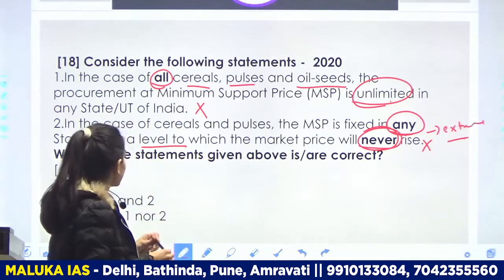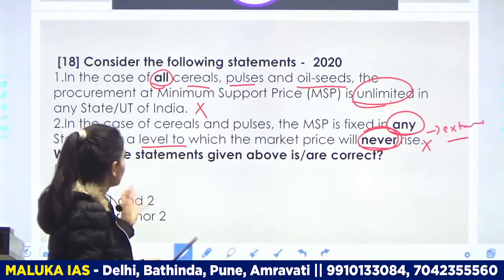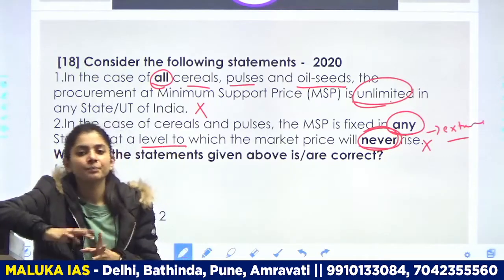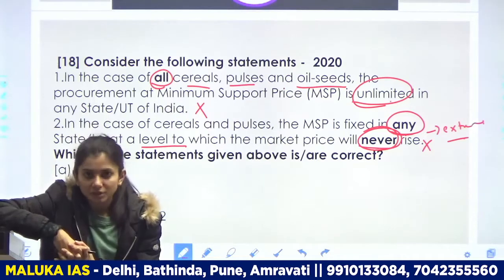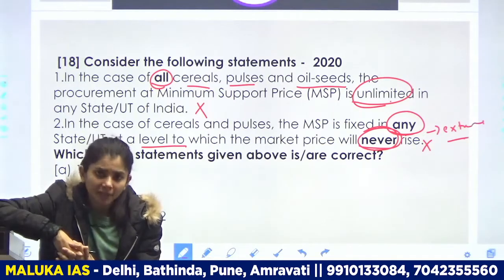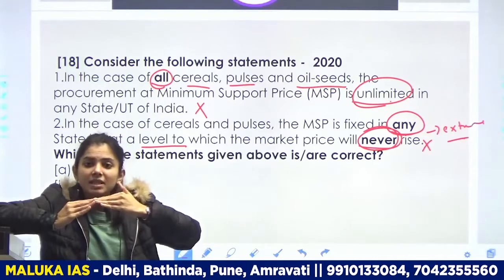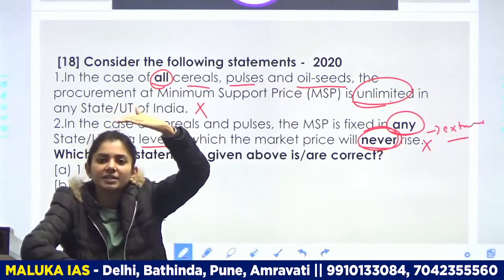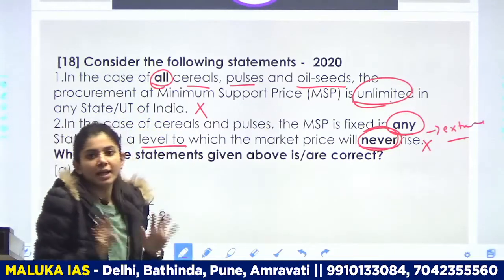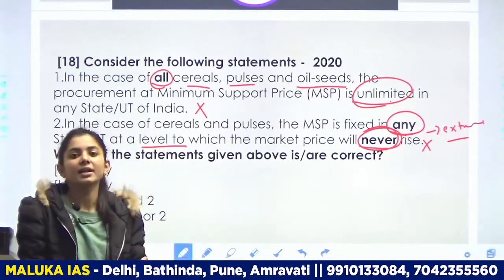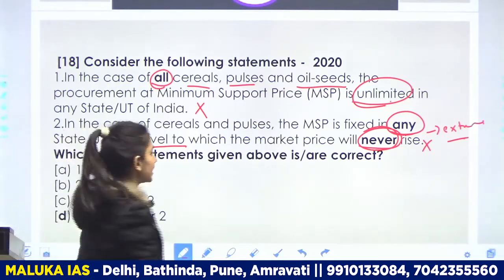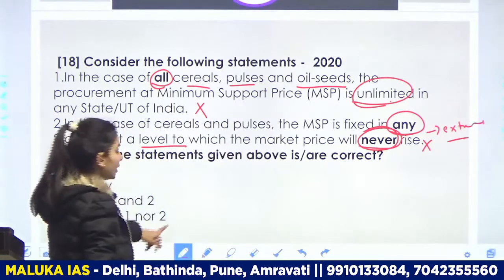Second statement: in case of cereals and pulses, MSP is fixed at a level — ab mujhe bataiye, kya MSP uss level par kar sakte hain jahan tak market price kabhi badhega hi nahi? Market price based on market forces jo ki free hain — freely announce ki jaati hain. Jab yeh free hain, that means inका koi level nahi hai — yeh yahan tak bhi pahunch sakti hain, yahan tak bhi gir sakti hain. So this means we don't have to directly say market price will not increase — it can increase, because market forces are free. So this statement is also wrong. Our answer is D — neither one nor two.